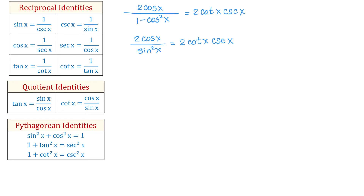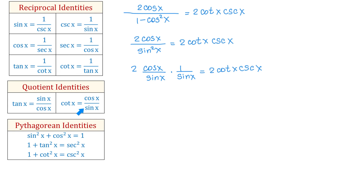Now I will rewrite the left side as 2 cosine of x over sine of x times 1 over sine of x. The right side is still 2 cotangent of x cosecant of x. According to the quotient identities, cosine of x over sine of x is cotangent of x.